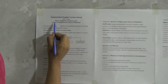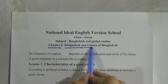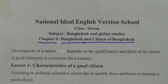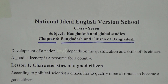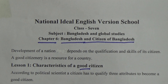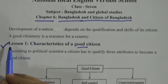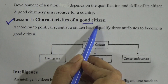Our today's chapter is Chapter 6 and the topic is Bangladesh and Citizens of Bangladesh. As we know, development of a nation depends on the qualification and skills of its citizens. So a good citizenry is very important for a country. In this chapter, we will know about good citizens, what are the barriers to being a good citizen, and the rights and duties of a good citizen. We will look at lesson number 1 and find characteristics of a good citizen.